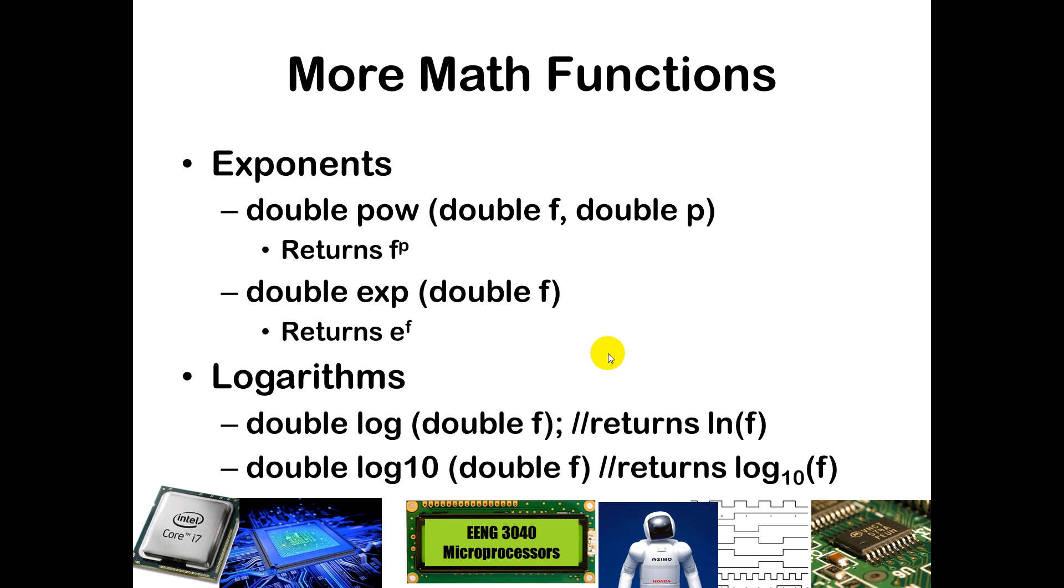If you want to do exponents, now you have the ability to do that with the pow function. And this takes in two arguments. It's very important that you put those arguments in in the correct order. So if you put pow, whatever your f value is, and then whatever your p value is, that takes f to the p power. Okay, so it's very important that you put those in in the right order. If you swap the arguments, you're going to take p to the f power, which is probably not going to be what you want there.